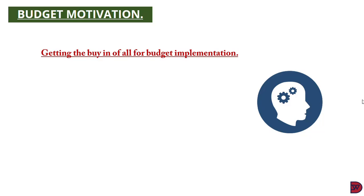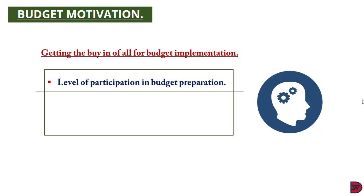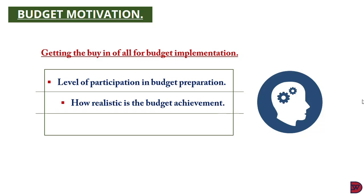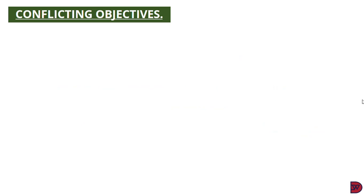To obtain the right behavior from managers towards budget implementation, the budget must seek to motivate them. The first motivating factor is the level of participation in budget preparation — the more managers or staff are involved, the more motivated they are, and they are more likely to own the budget. The second factor is how realistic the budget is; if set far beyond the manager's capacity, it will be demotivating. The last is whether managers will be rewarded for their performance — through promotion, salary increment, annual bonus, or recognition.